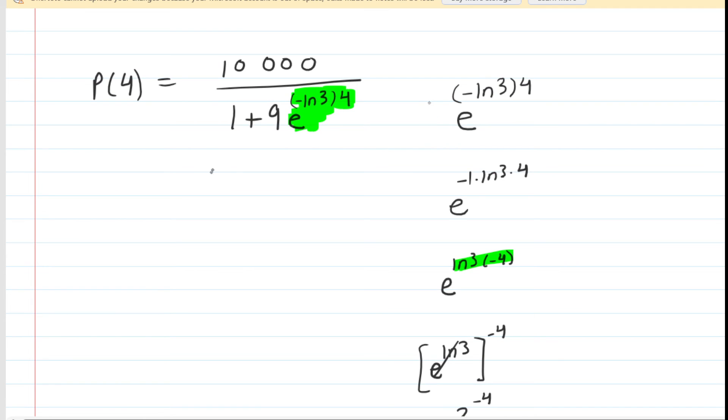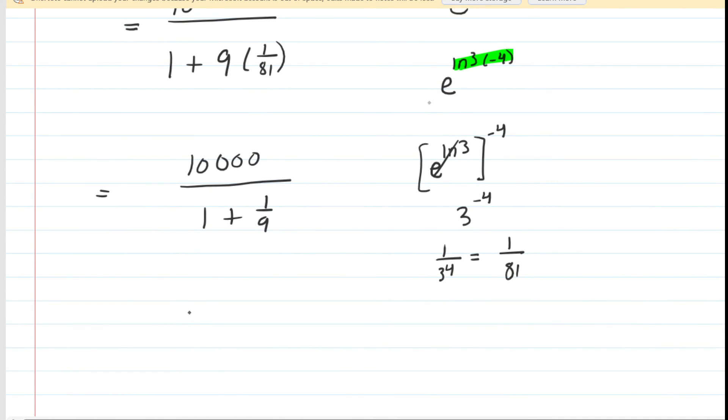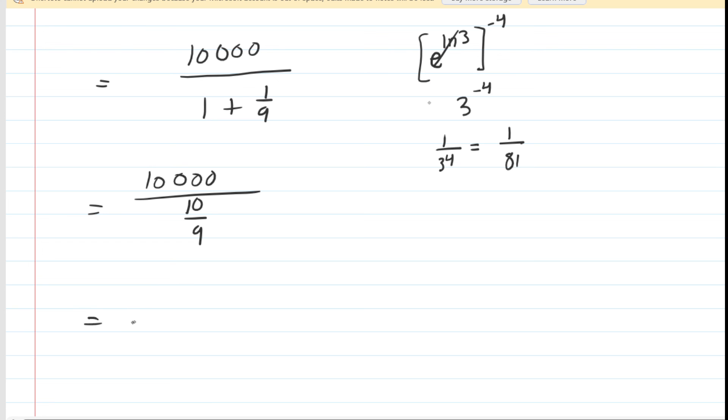So that little aside shows us that that green term that we highlighted is equal to 1 over 81. So let's put that in. Now, of course, when we multiply 9 by 1 over 81, we get 9 over 81. But 9 over 81 would simplify to just 1 ninth. So on the bottom, we have 1 plus 1 ninth. But that's just 9 ninths plus 1 ninth, which is 10 ninths on the bottom. So now we have 10,000 divided by 10 ninths. We just do a little what I call keep change flip. So keep the 10,000, change the problem to multiplication, and then flip the fraction upside down. So now we have 90,000 divided by 10, which is indeed 9,000. So this is the correct answer to the question.